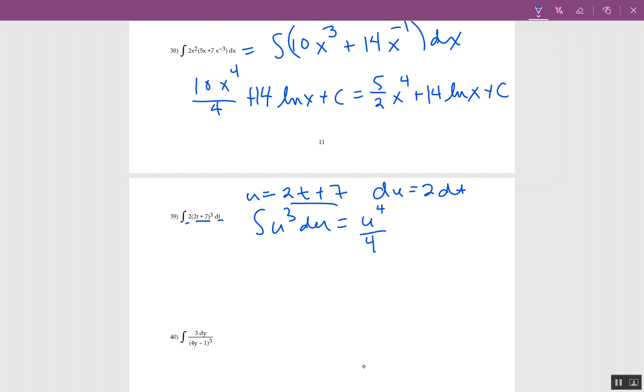Now I integrate. Power goes from 3 to 4, divide by 4. Then go back and say what was u: u was 2t plus 7, now raised to the 4th, over 4, plus c. There is no simplification. This is perfect.